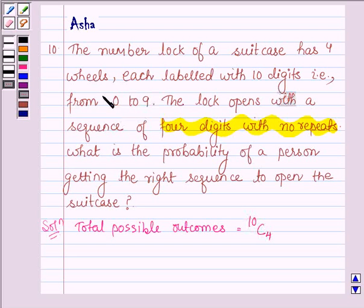Because from 0 to 9, there are 10 digits and 4 digits are required to open the lock with no repeats. Therefore, 10C4 is equal to 10 factorial divided by 4 factorial times (10 minus 4) factorial.